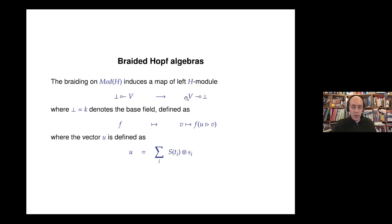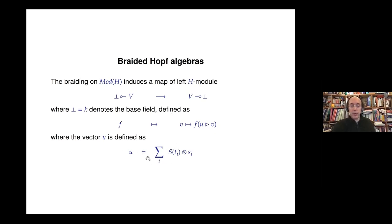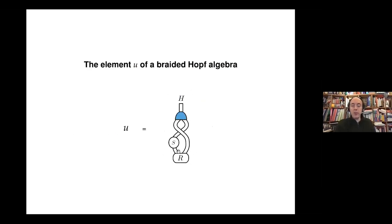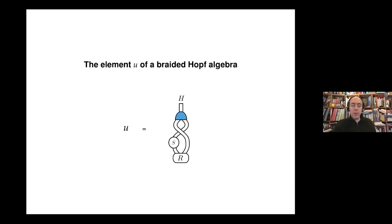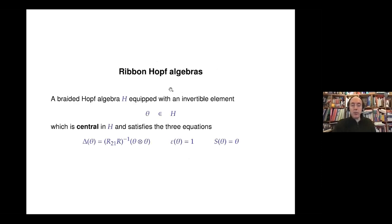The braiding relates the right negation to the left negation. From a logical angle, this is saying that the braiding induces a map from right negation to left negation, which can be understood in a logical way. Computing this map: it associates to any form this form where we pre-compose with an action of u, where u is a specific element in the Hopf algebra — an extremely important vector in the theory of quantum groups.